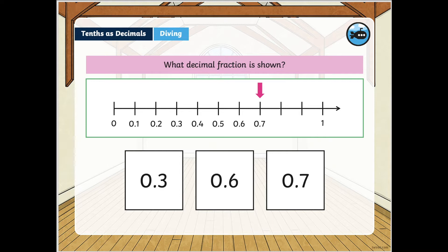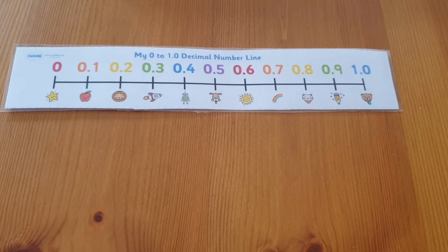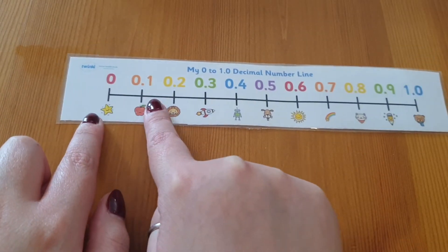This can then be shown on a number line to show how the ten spaces between 0 and 1 are each worth 0.1. These number lines are useful to show this pattern.